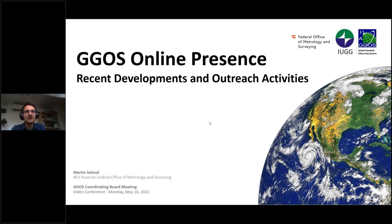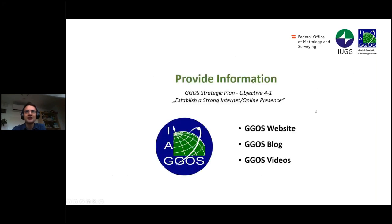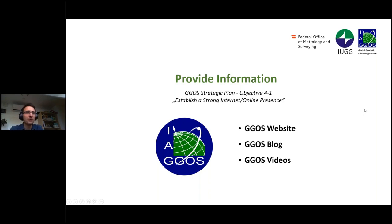I'll talk about the online presence of GIGOS and recent developments and outreach activities from my side. First of all, let's start with the strategic plan of GIGOS. Objective 4.1 is to establish a strong internet online presence, to provide information to people, and we have developed a lot of things in the last years. For example, the GIGOS website, the GIGOS blog, and also the GIGOS video, and I would like to go into more detail about these points.